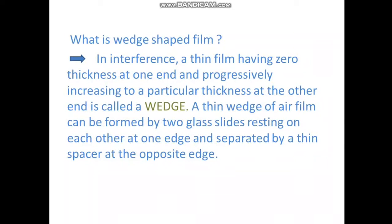Once we got idea about thin film, then we have to discuss about wedge-shaped film. A wedge-shaped film is a thin film having zero thickness at one end and it increases progressively to a particular thickness at the other end, and that is called as wedge.